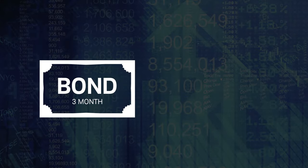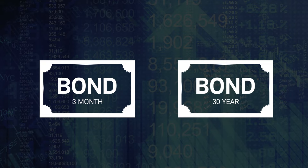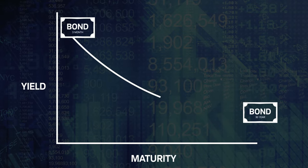But occasionally, yields of shorter maturities are greater than yields of longer maturities, so the slope of the yield curve turns negative or inverted.